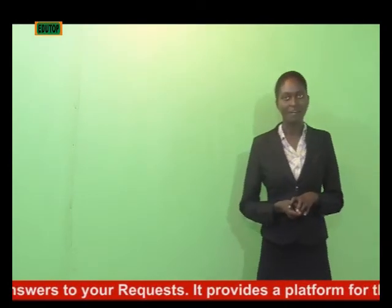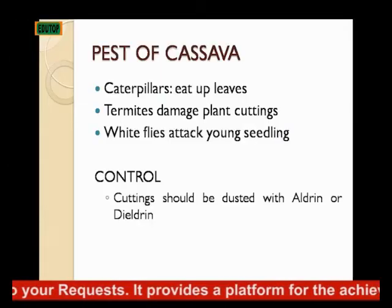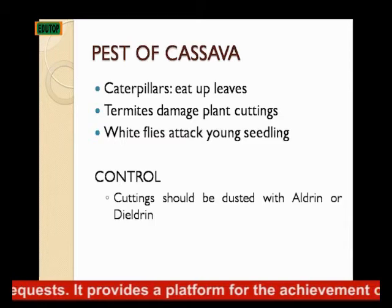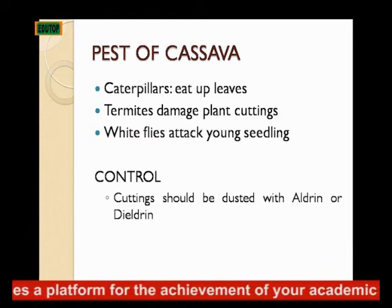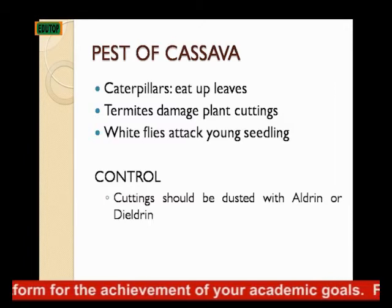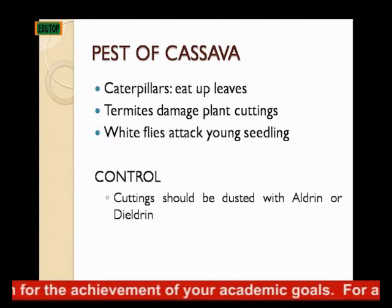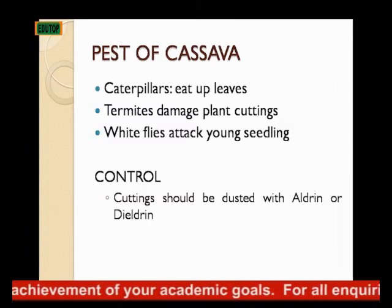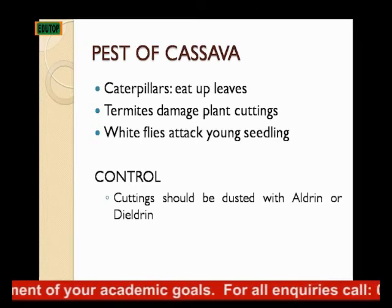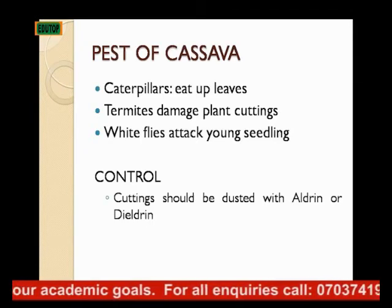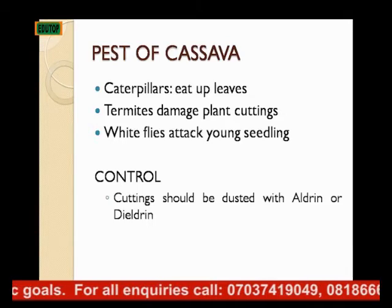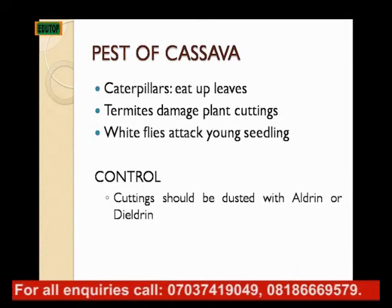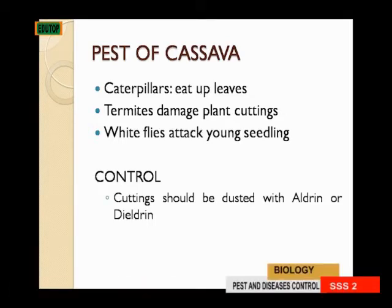The pests of cassava include caterpillars, which eat up the leaves; termites, which damage the plant's cottons; and whiteflies, which attack the young seedlings of cassava. You can control cassava pests by dusting the stem cuttings of cassava with aldrin — a powder chemical — before planting.